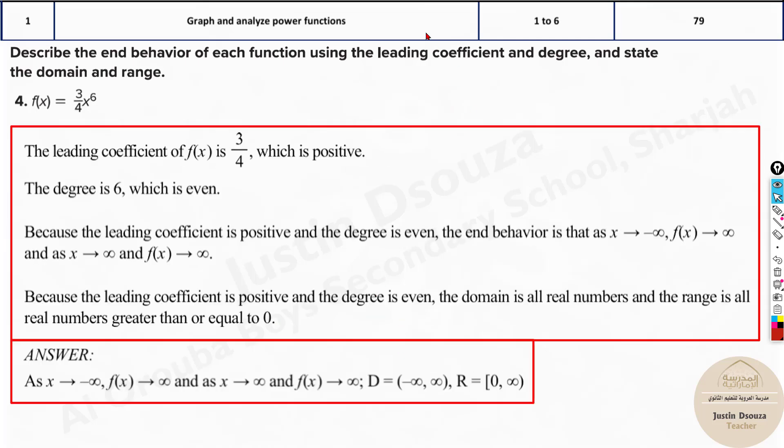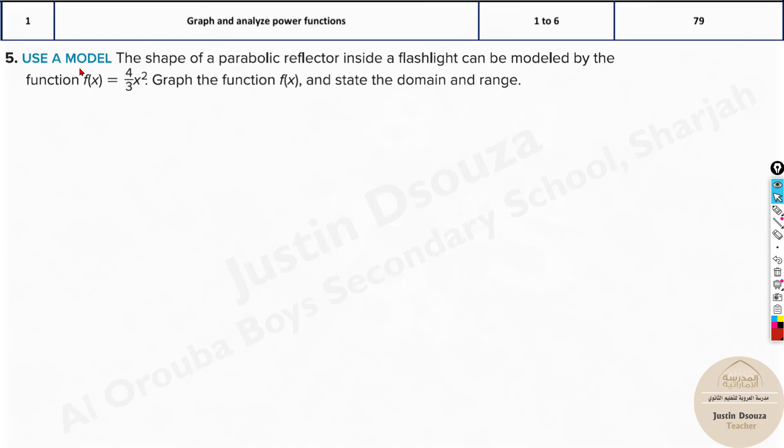Even over here, it's even power. For this problem here, question number five, use a model. Shape of a parabolic reflector inside a flashlight that can be modeled by this function. Graph the function f of x. State the domain and range. You need to state the domain and range. Looking at this one, you can tell it is all real numbers is the domain. Range is all numbers greater than zero. I'll just write it out over here. For domain, it would be minus infinity to positive infinity. Range would be zero, this is closed like this, and the small bracket here. Now, how do you graph it up? I will show you.